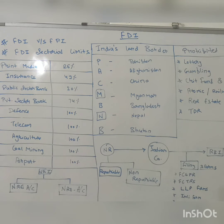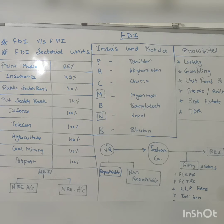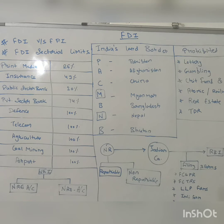Now there are certain restricted areas in which FDI cannot be brought. It is a very stringent area — you can't invest in it without government rules and regulations. The prohibited areas of FDI include: Lottery, Gambling and Betting, Chit Funds, Nidhi Company, Atomic energy and Railways — private sector is not allowed foreign investment here — and Real Estate and TDR (Trade Development Rights).